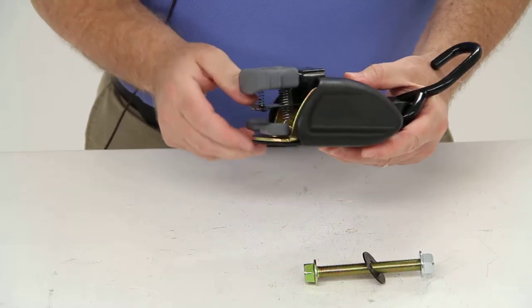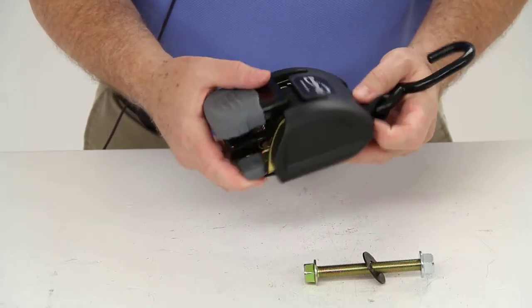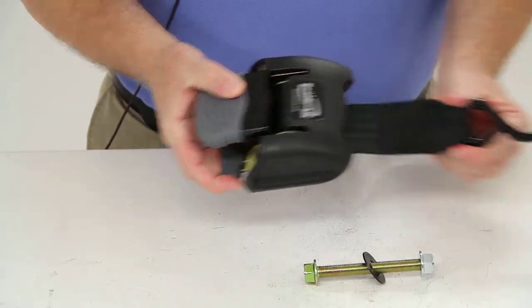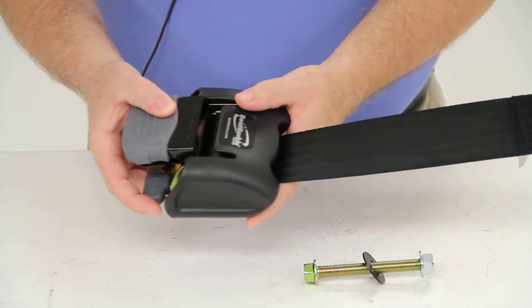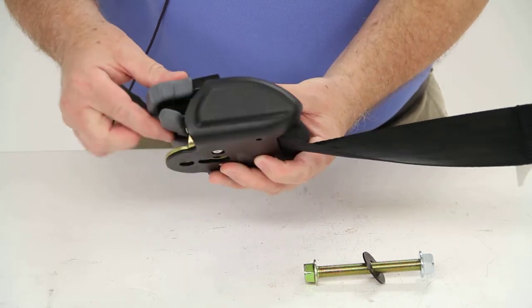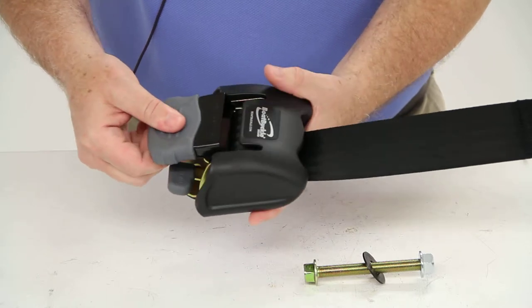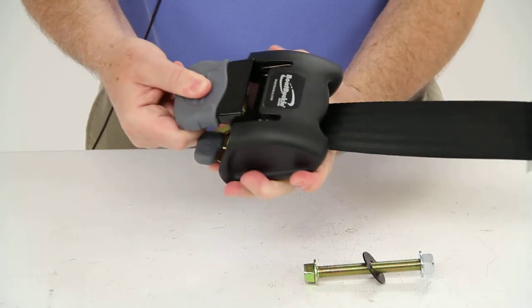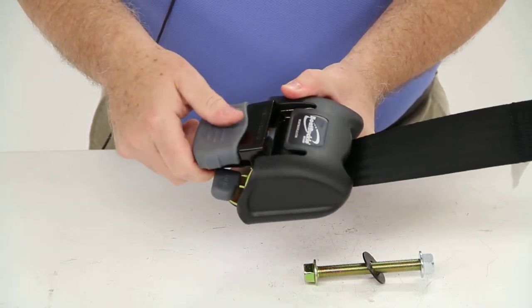The way this works is when you push down on the release lever, it will allow the strap to extend out. You can hook it to the bow of your boat. And then if you pull up on it, it will release the lever. There's a little lever underneath the handle. If you hold up on that, it will allow you to ratchet and tighten up the bow of your boat to your trailer.